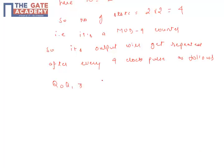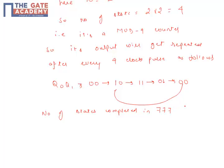So the states are going to be 00, then 11, then 01, then 00 again, and so on. Now, number of states completed in 777 clock pulses is equal to 777 divided by 4, which is equal to 194 with remainder 1.